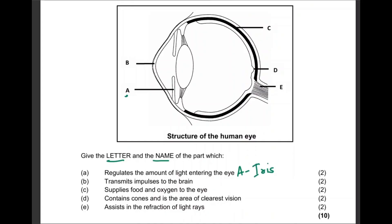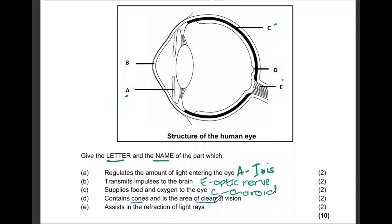Give the letter and name of the part which transmits impulses to the brain — that will be E, the optic nerve. Then the part that supplies food and oxygen to the eye is C, the choroid. The part that contains cones and is the area of clearest vision is D, the yellow spot.